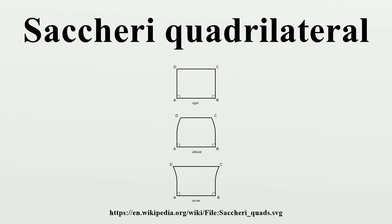A Saccheri quadrilateral is a quadrilateral with two equal sides perpendicular to the base. It is named after Giovanni Gerolamo Saccheri, who used it extensively in his book Euclides ab Omni Naevo Vindicatus, first published in 1733, an attempt to prove the parallel postulate using the method reductio ad absurdum. The first known consideration of the Saccheri quadrilateral was by Omar Khayyam in the late 11th century, and it may occasionally be referred to as the Khayyam-Saccheri quadrilateral.